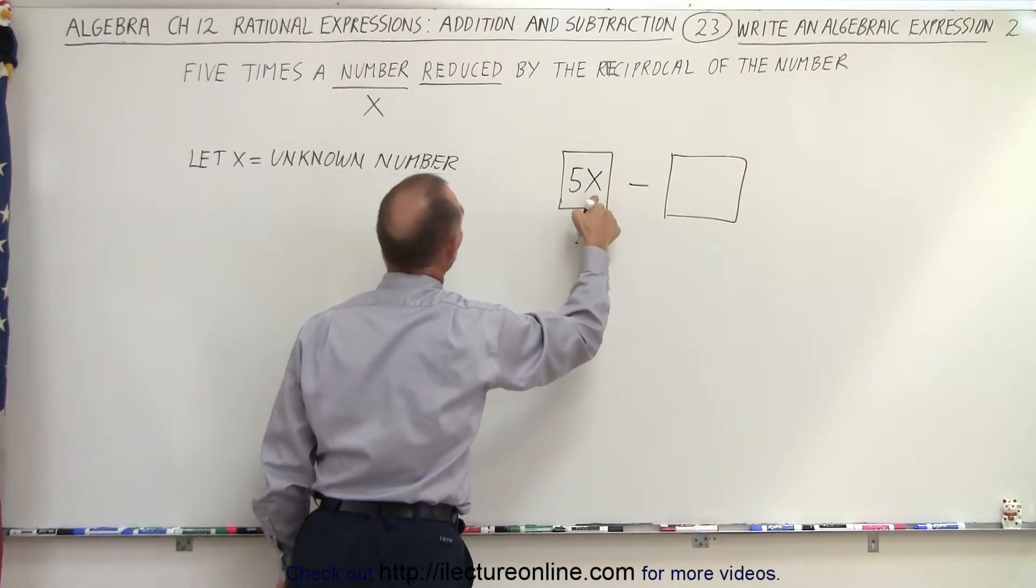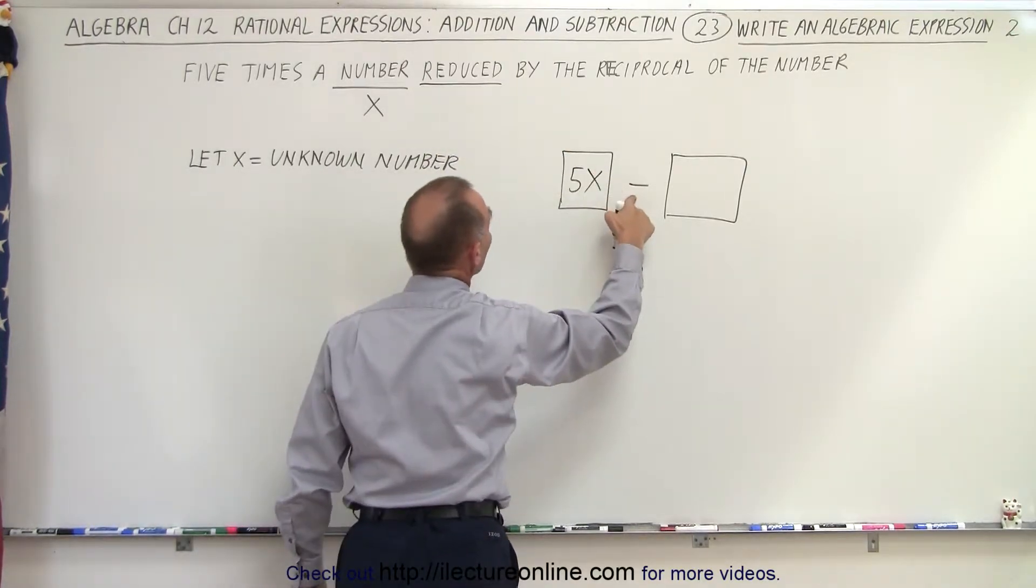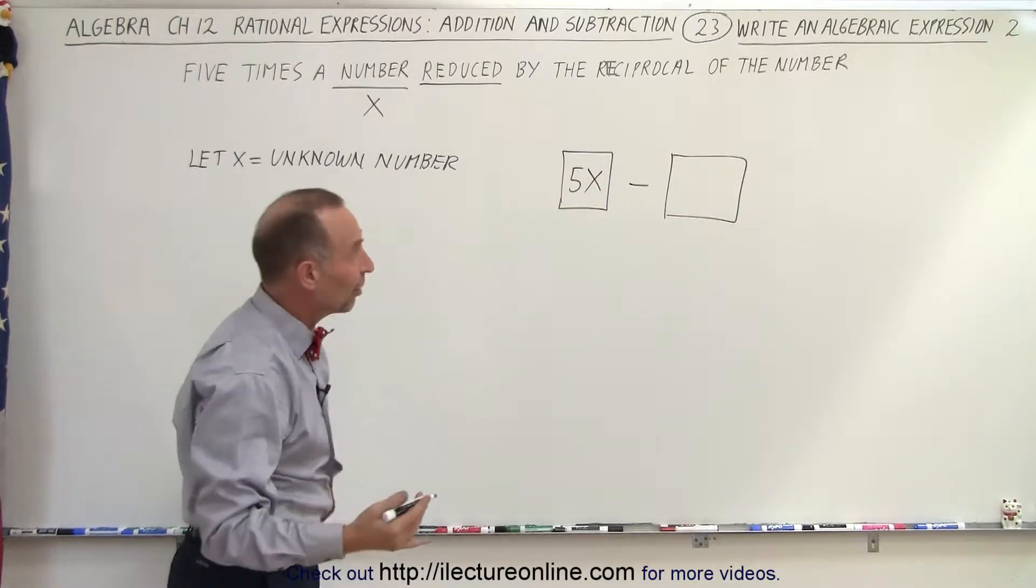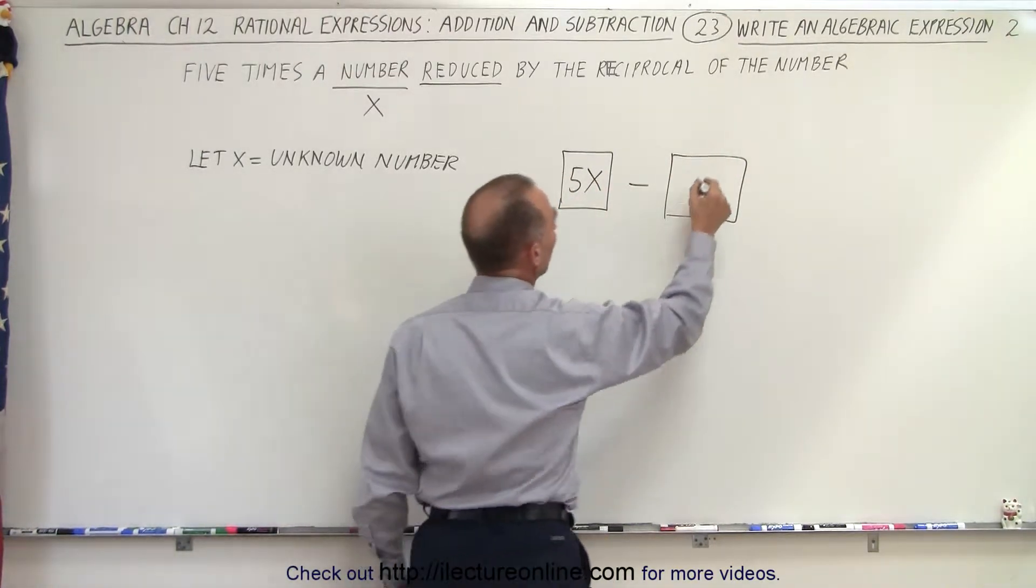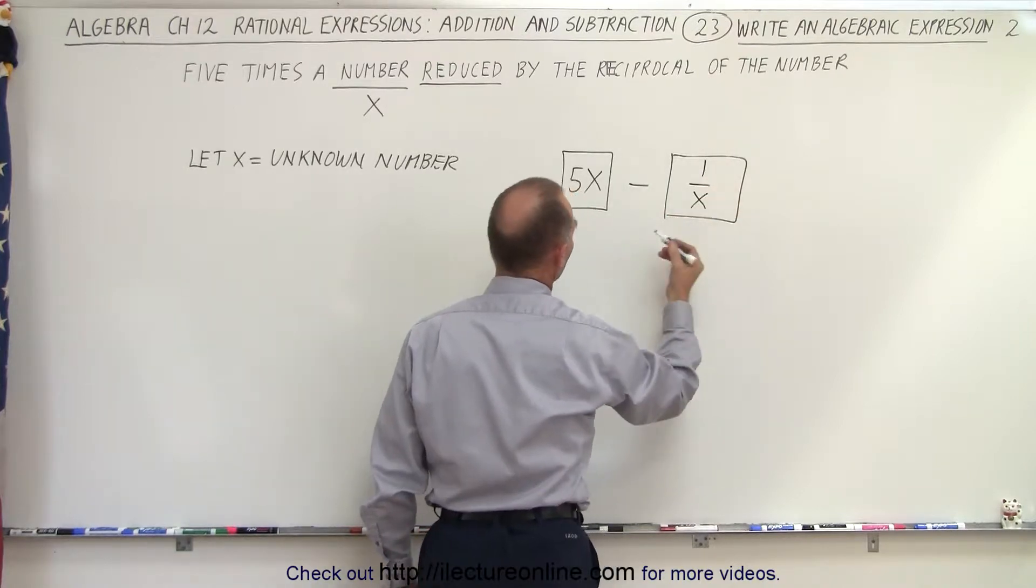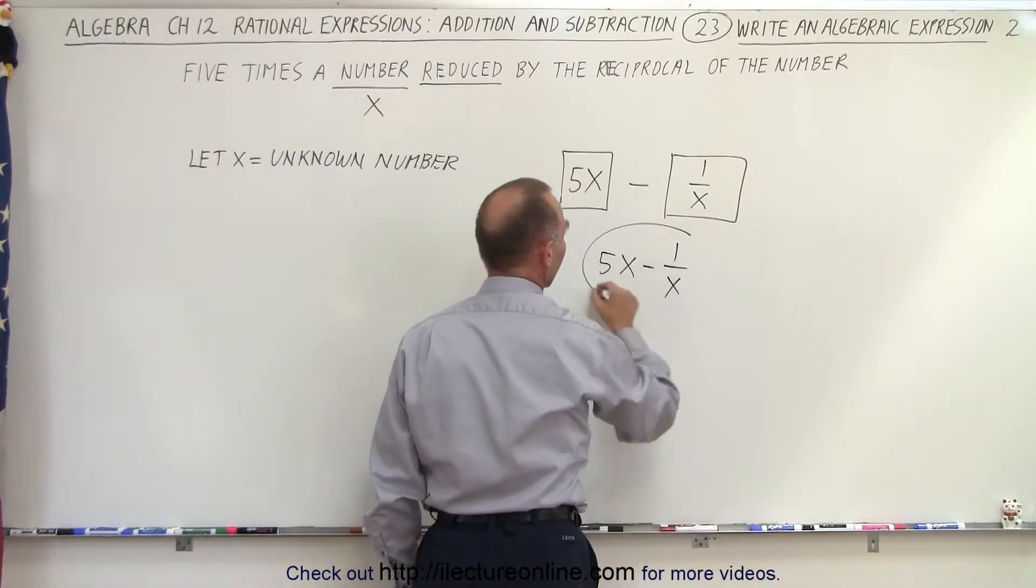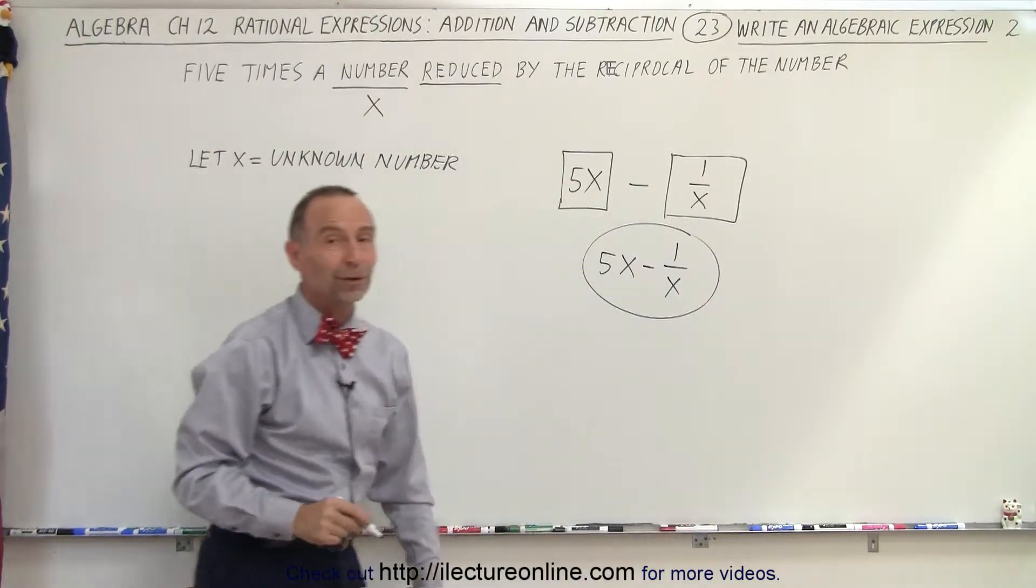So five times the unknown number reduced by minus the reciprocal of the number. So if x is the number, the reciprocal of the number would be one over x. So the expression is 5x minus one over x, and that is what we're looking for.